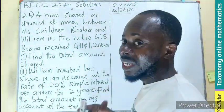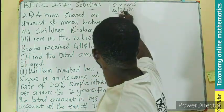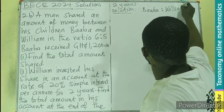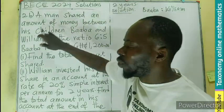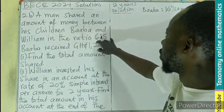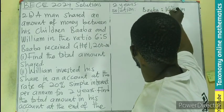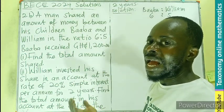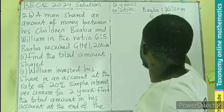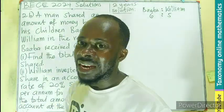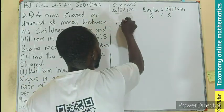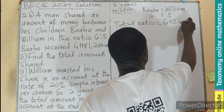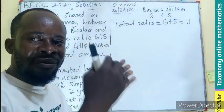Here we are going to say that the sharing is between 2 people: Baba and William. Baba and William will move with a ratio of 6 to 5. This means when the money is divided, 6 portions are given to Baba and 5 portions are given to William. So the total ratio will be 6 parts for Baba plus 5 parts for William, which gives us 11 parts. So the money was divided into 11 parts.